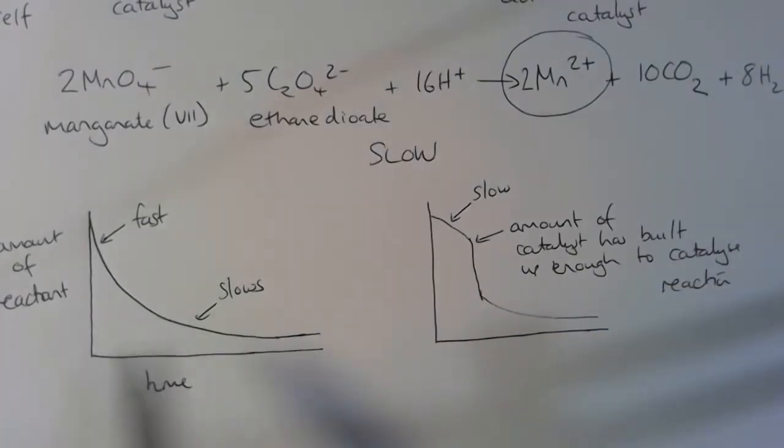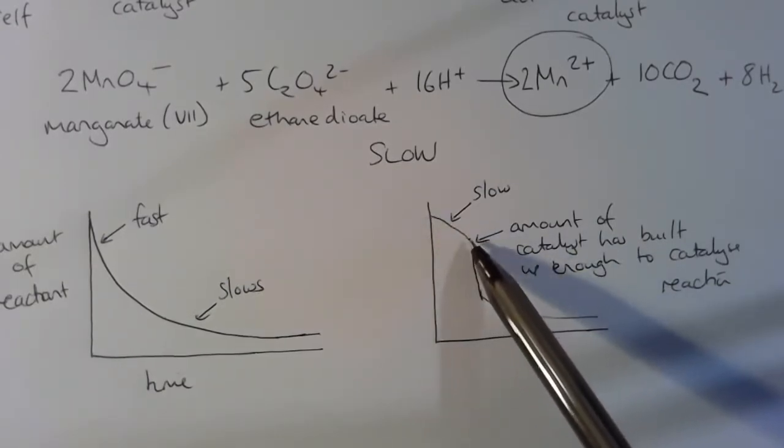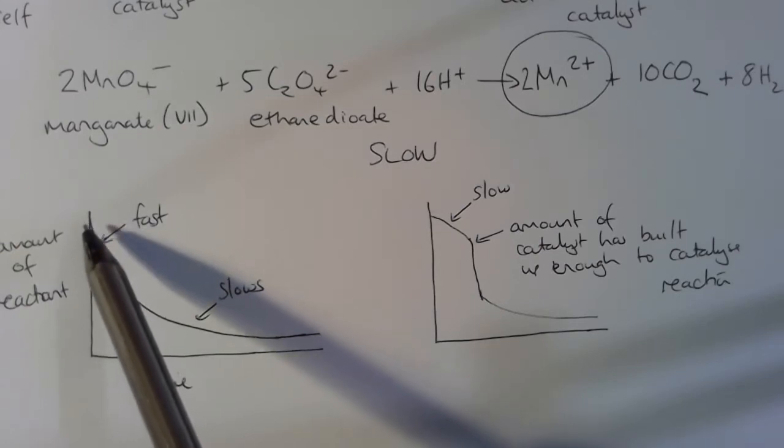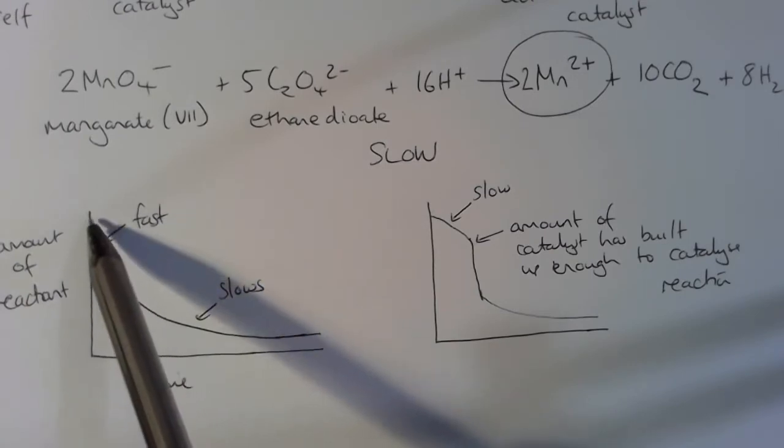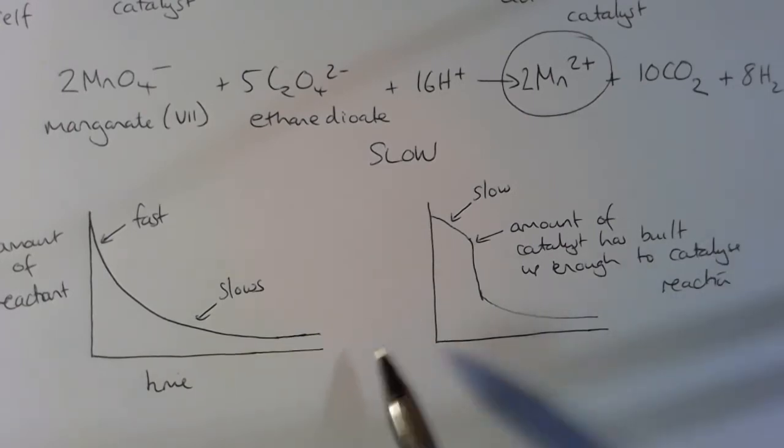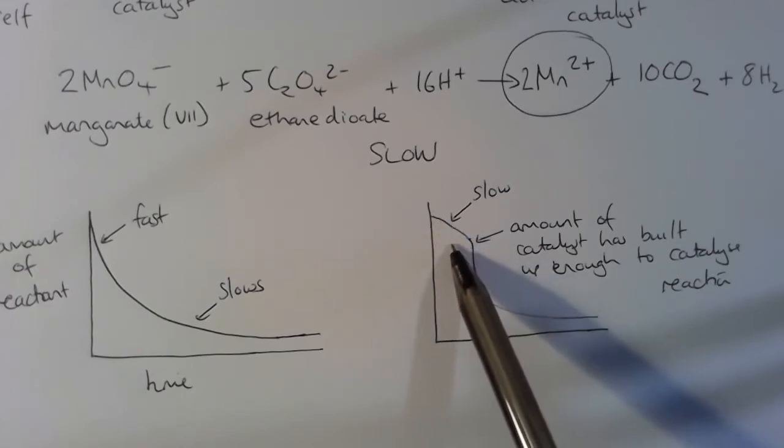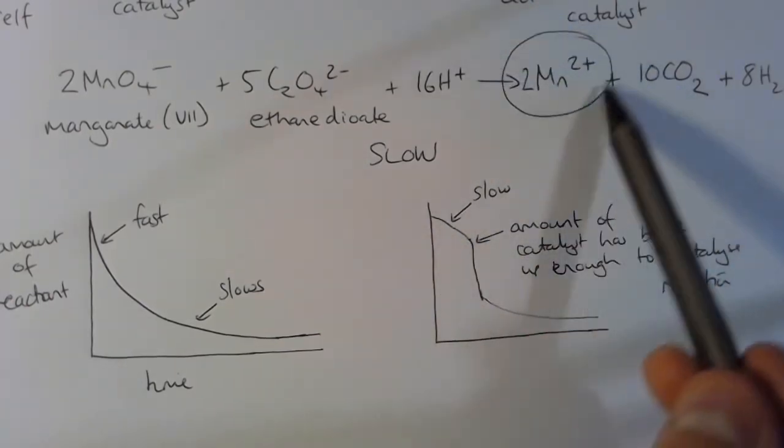And the key difference between these graphs, obviously the slope is different here, is that the rate suddenly increases. So the gradient suddenly becomes much steeper halfway through or after a period of time, whereas in an un-autocatalyzed reaction or even in a normal catalyzed reaction, we would always see this shape graph. The reaction is fast at the beginning and gradually slows down over time until it stops. In an autocatalyzed reaction, we see at some point after the beginning of the reaction, the reaction suddenly speeds up again.